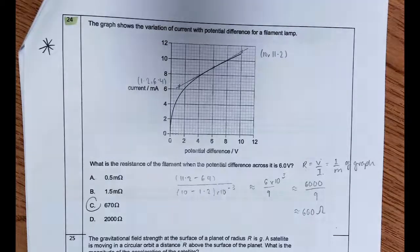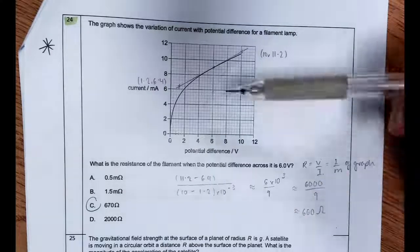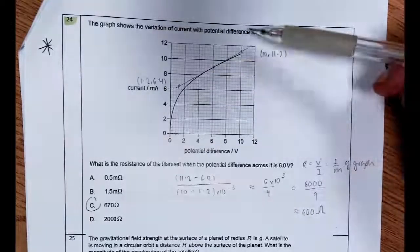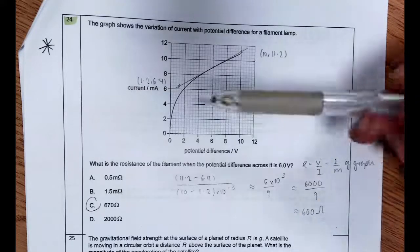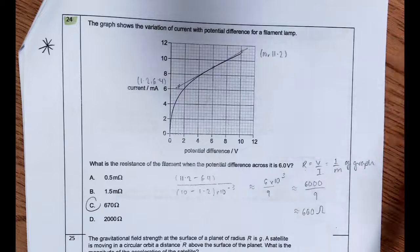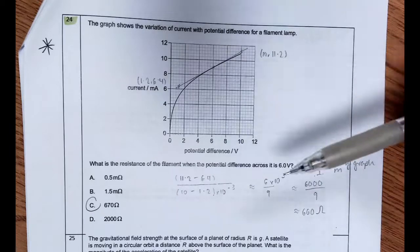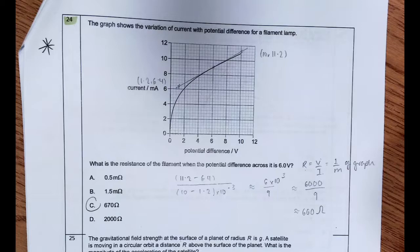So the gradient of the graph, finding the reciprocal of the gradient of the graph will give you the resistance at any point in time. So I went to 6 volts, I had a look, I drew a tangent to the graph at that point, and I chose two points. Obviously it's a non-calculated paper, and so you need to just approximate.